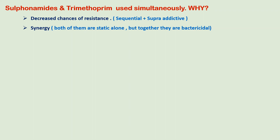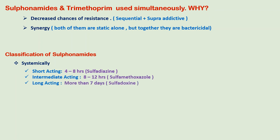Sulfonamides can be classified as those that act systemically, locally, or both. Systemically acting agents are further divided into short-acting, intermediate, and long-acting. Short-acting agents act for about 4 to 8 hours and include sulfadiazine. Intermediate-acting agents include sulfamethoxazole, which acts for 8 to 12 hours. Long-acting agents, lasting more than 7 days, include sulfadoxine.